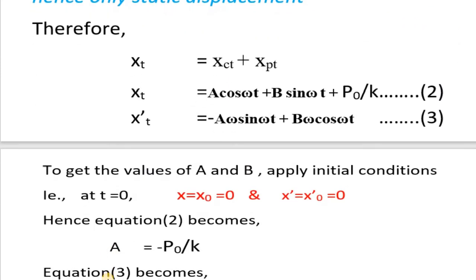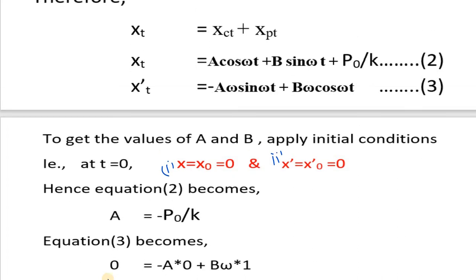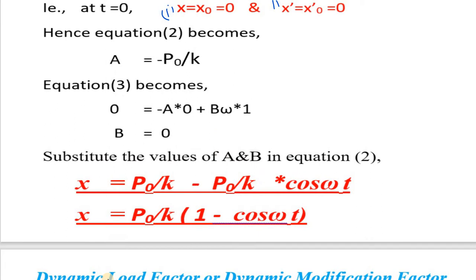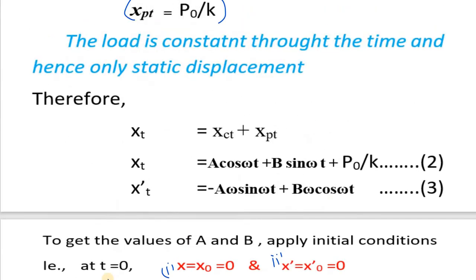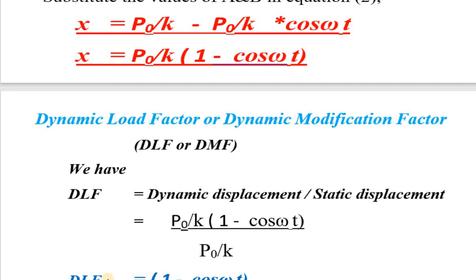The general solution is xc plus xp(t). Applying boundary conditions at t equals zero with x0 equals zero, we can find constants a and b. We get a equals minus p0/k and b equals zero. Therefore the solution is x equals p0/k minus (p0/k) cos(ωt). This is the response of an undamped dynamic system subjected to a constant load or impulse.